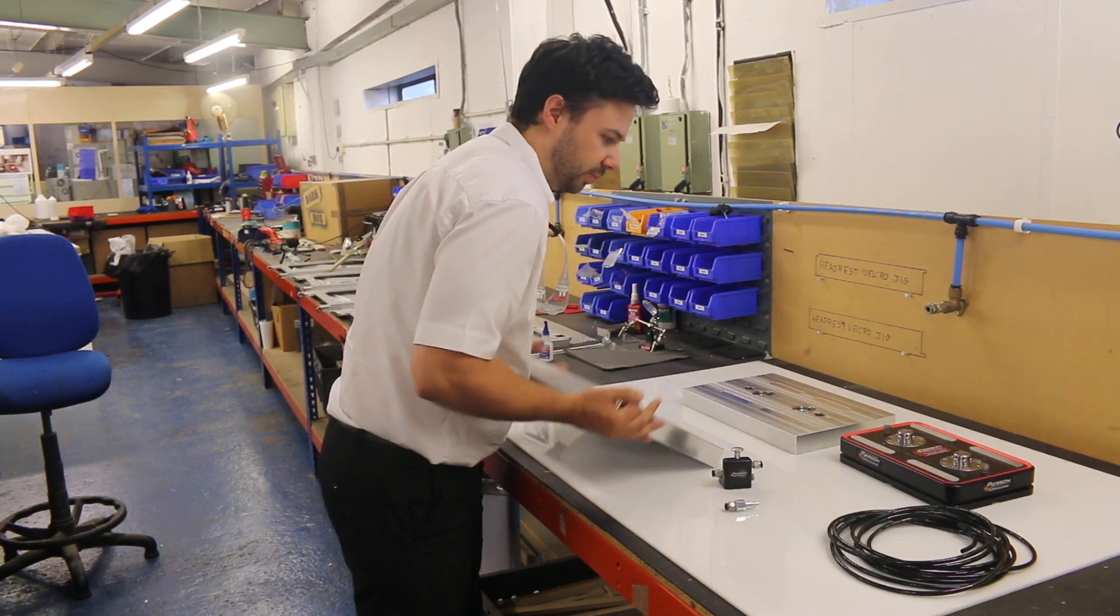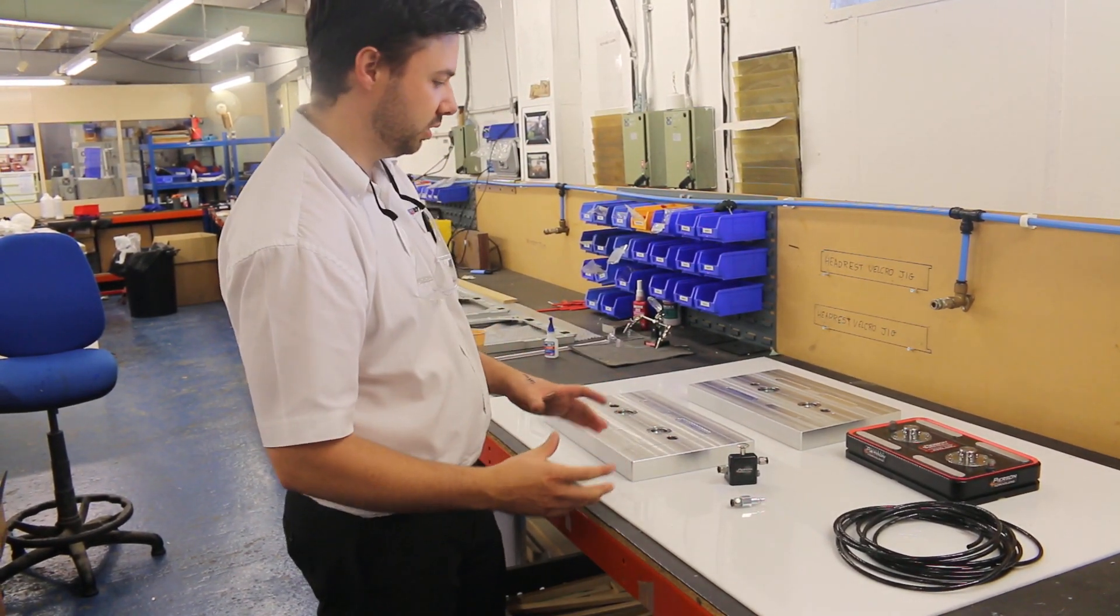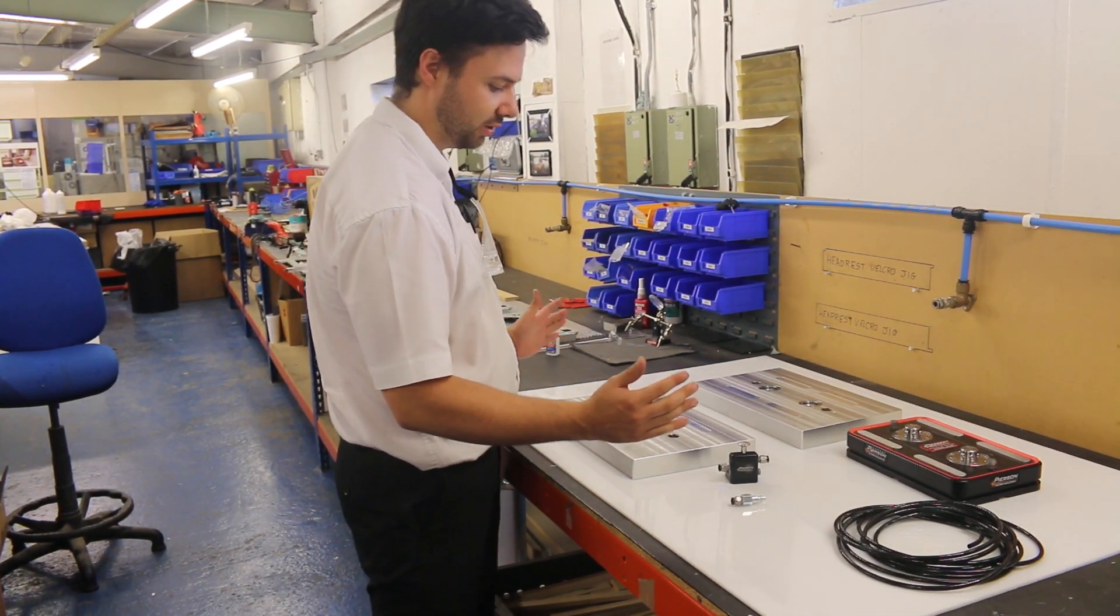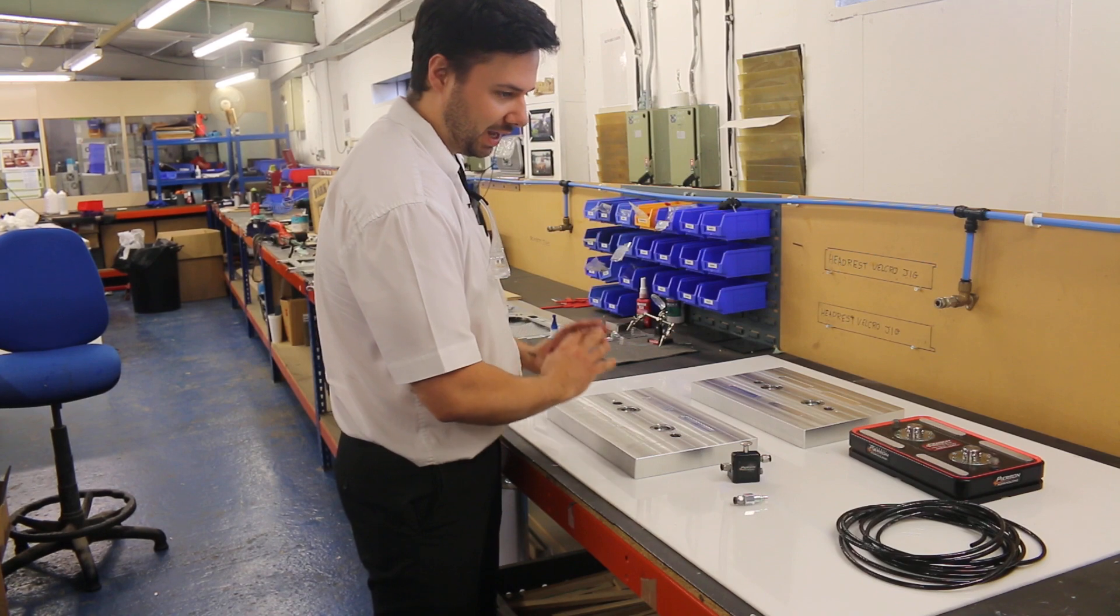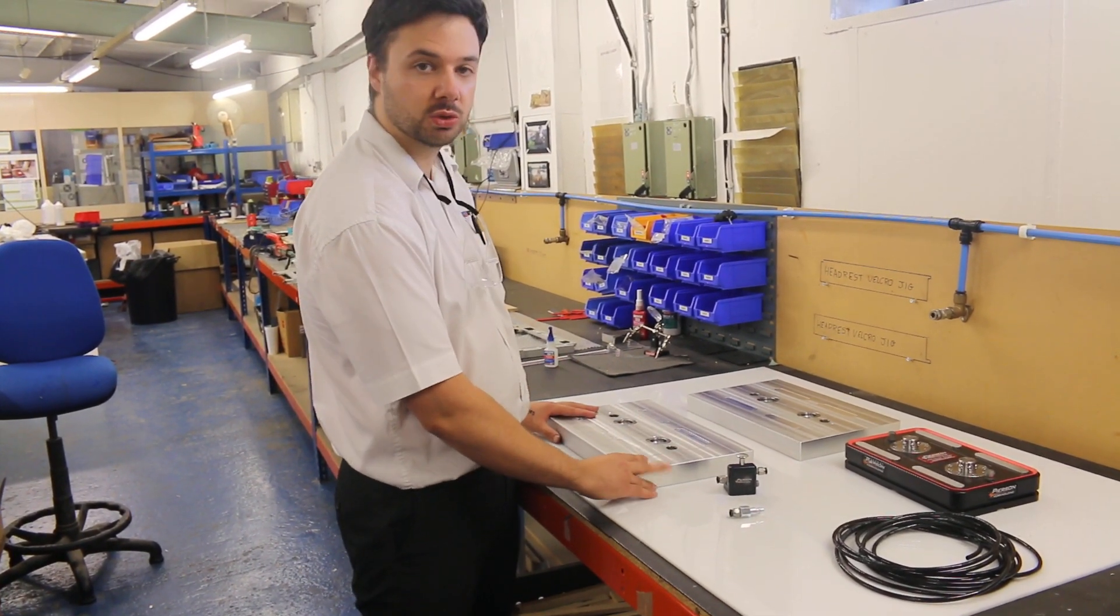When you look at the machine footprint and see two curved vises for operations one and two, you can apply the same principles but maximize the machine's footprint. Think of this as a blank canvas where you can make it your own and tailor it to your application.